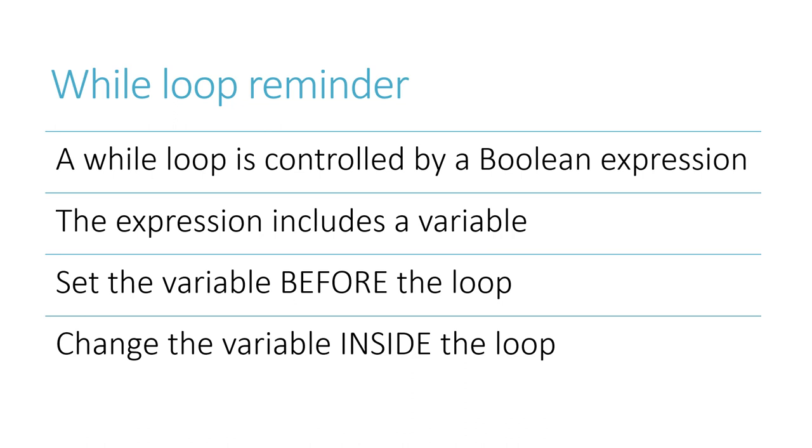Remember the checklist for a while loop. Every while loop is controlled by some kind of Boolean expression. And if we want that loop to stop, we've got to include a variable in our Boolean expression so that the truth value can change.